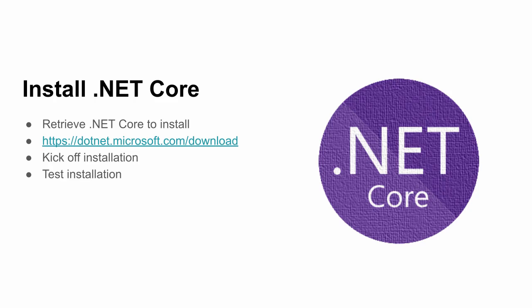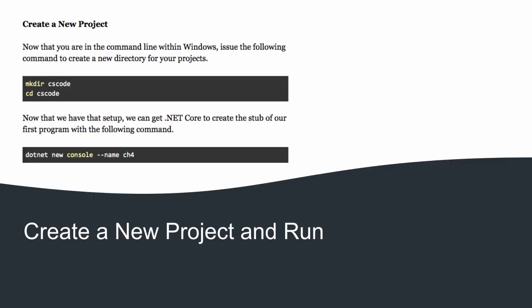To install .NET Core, you're going to go out to the following link: dotnet.microsoft.com/download. You'll see the link in there and then you can download .NET Core, kick off the installation, and then do a simple test after it's done to make sure everything got installed okay.